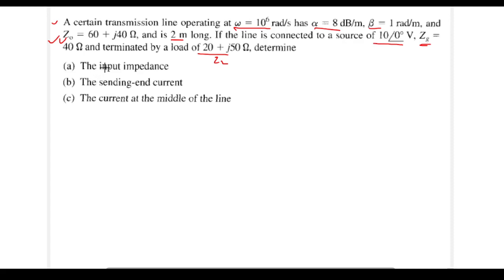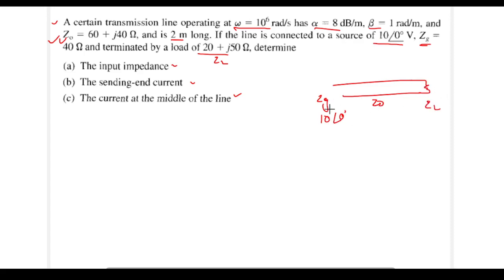The question asks us to find: the input impedance, the sending end current, and the current at the middle of the line. The transmission line has ZG and the voltage source on one side, characteristic impedance Z0 along the line, and load impedance ZL at the other end. We need to find Z_in at the input, the sending end current, and the current I_M at the midpoint.